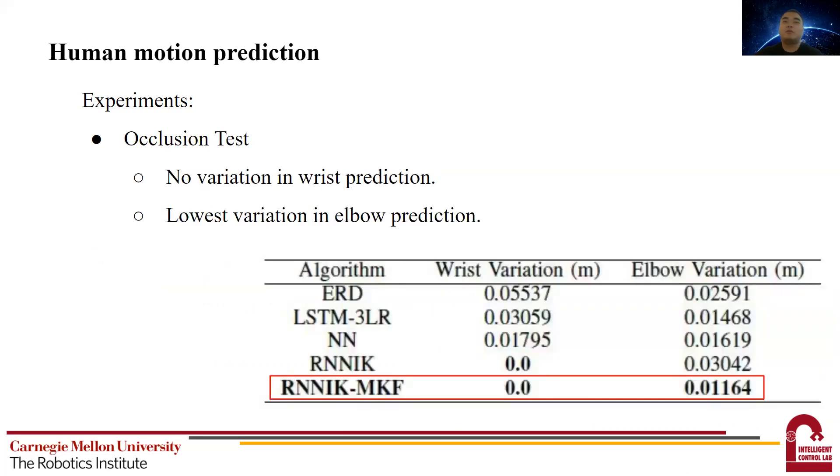From this table, we can see our method had no variation in wrist and the lowest variation in elbow. This is because we separate the wrist and elbow prediction. The occlusion of elbow does not impact the wrist. Also, the physical model we used helps the algorithm to achieve the lowest variation in elbow.